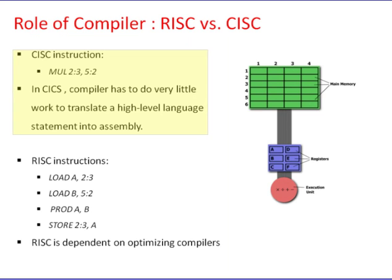MUL operates directly on the computer's memory bank and does not require the programmer to explicitly call any loading or storing functions. It closely resembles a command in a high-level language — for instance, if A represents the value at 2:3 and B represents the value at 5:2, this command is identical to the C statement a = a * b. One primary advantage is that the compiler has to do very little work to translate a high-level language statement into assembly, and because code length is short, very little RAM is required to store instructions.